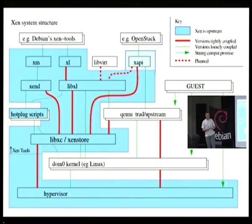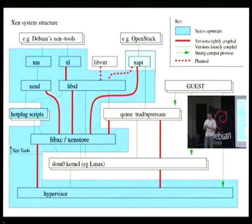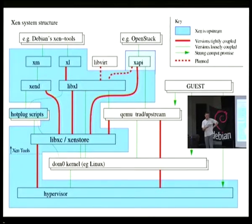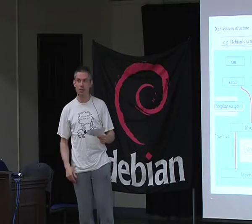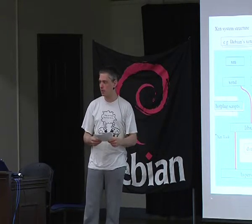So we've traditionally had a very strong compatibility guarantee. Guests which are written against old versions of Xen and work correctly there are supposed to work on future versions of Xen. Currently, upstream supports guests written to run on previous Xen versions going back to Xen 3.0, which was released in 2005. That means we retain the ability to service all the old guest-facing hypercalls, all the I/O facilities and memory management interfaces, even if they've been replaced by something newer, better, faster, and less painful to support.